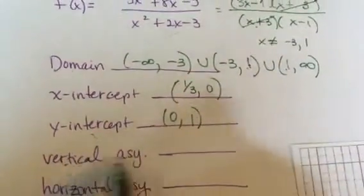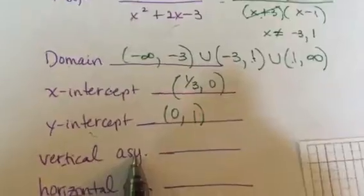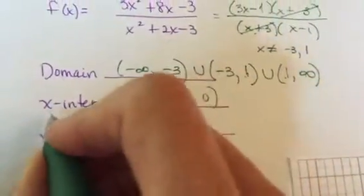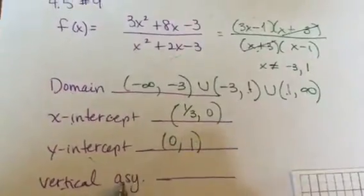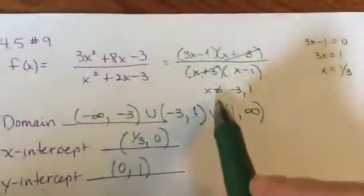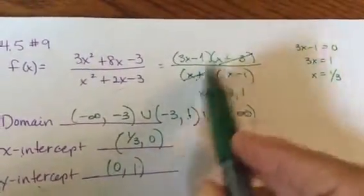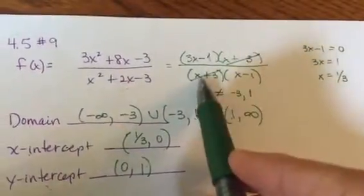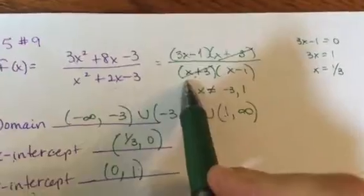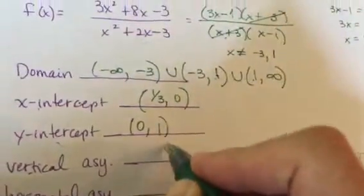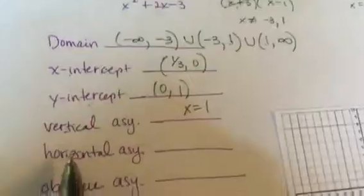Your vertical asymptote is what makes the denominator 0. So remember your x-intercept is what makes the top 0. Your vertical asymptote is what makes the bottom 0. And these cancel. The only time you really look at this one is when you're thinking about the domain. But since these cancel, your only vertical asymptote is 1. So it's x equals 1.